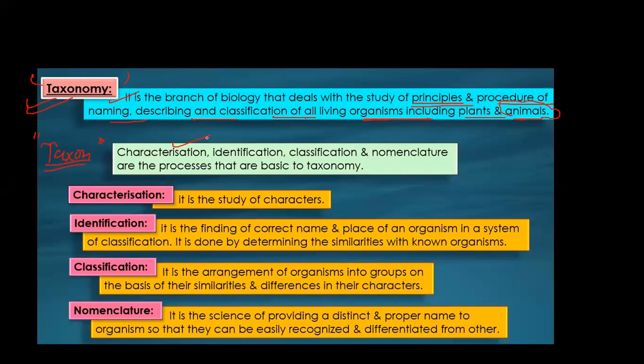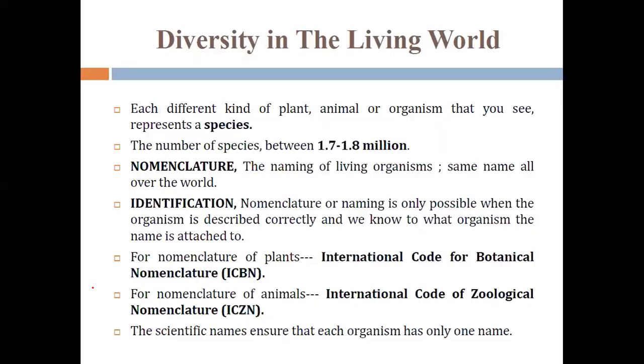The basic steps in taxonomy are: characterization — understanding the characters and features; identification — if an organism is not known, we go near it and identify it based on similarities; classification — matching similarities and classifying; and finally, naming.